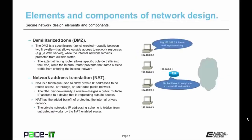Another design element is network address translation, or NAT. NAT is a technique used to allow private IP addresses to be routed across an untrusted public network. The NAT device — which is usually a router — assigns a public routable IP address to a device that is requesting outside access. NAT has the added benefit of protecting the internal private network because the private network's IP addressing scheme is hidden from untrusted networks, making it harder for a hacker to gain access to internal resources.